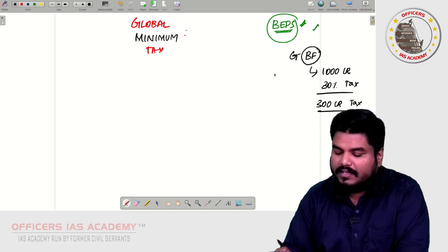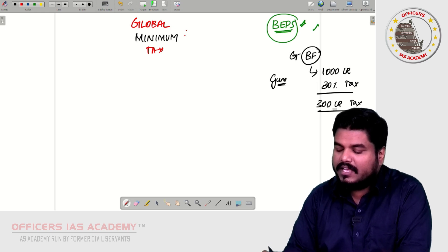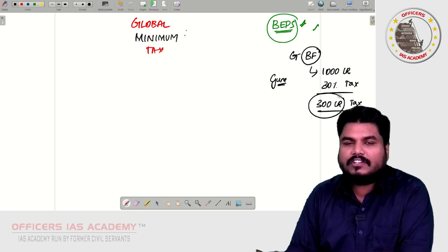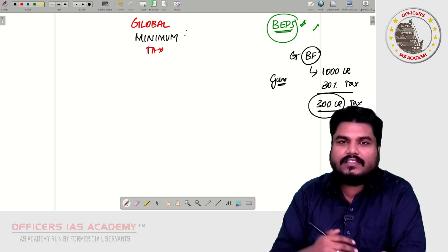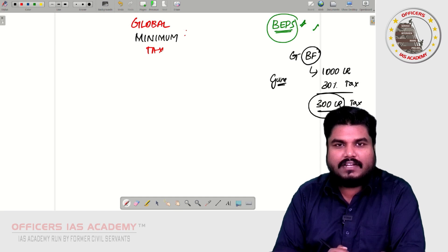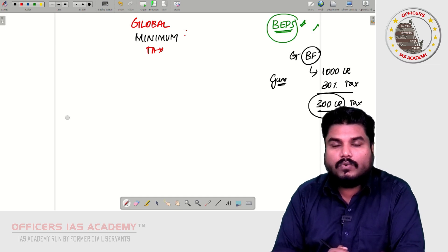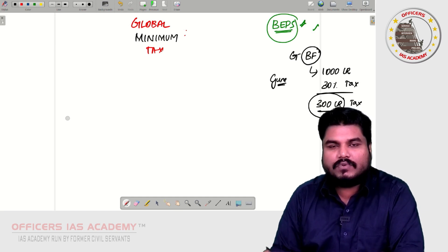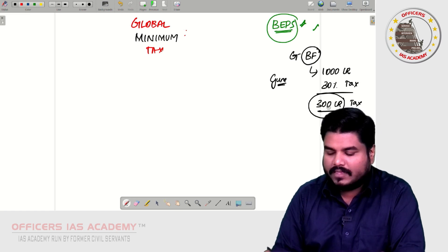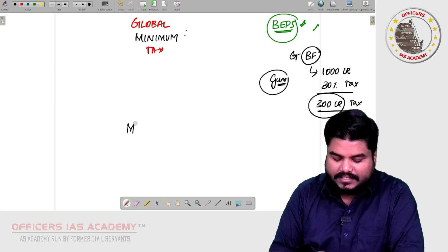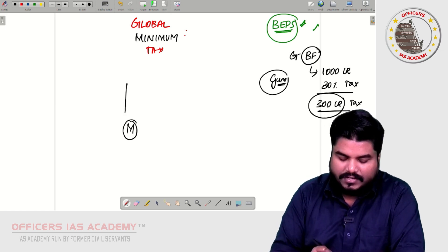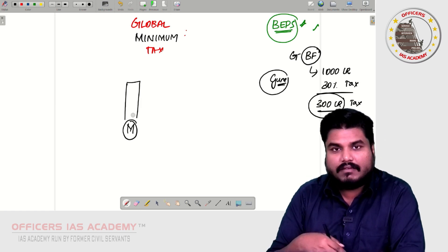So Guna was feeling that this is Guna's hard earned money. How can he give this much amount of money to the government in the name of tax? So what Guna did - Guna called the experts, auditors, advocates to find a way out to save this tax amount, to reduce this tax liability.